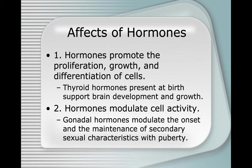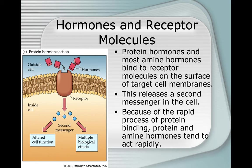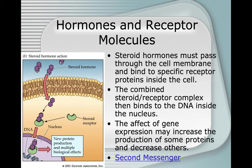Hormones promote the proliferation, growth, and differentiation of cells. Thyroid hormones present at birth support brain development and growth. Gonadal hormones modulate the onset and maintenance of secondary sexual characteristics with puberty. Protein hormones and most amine hormones bind to receptor molecules on the surface of target cell membranes, releasing a second messenger rapidly. Steroid hormones must pass through the cell membrane and bind to specific receptor proteins inside the cell; the combined steroid-receptor complex then binds to DNA inside the nucleus, affecting gene expression.